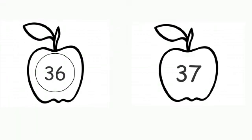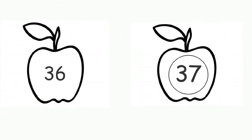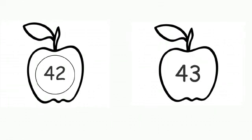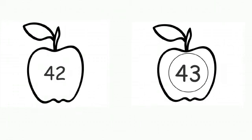Now what number is this? Number 36. 3, 6, 36. So what comes after 36? Very good — 37. 3, 7, 37. Okay — 4, 2, 42. So what comes after 42? 4, 3, 43. Good job. Now tell me, which number is this? Number 29. 2, 9, 29. What comes after 29? 3, 0, 30. Awesome, children!